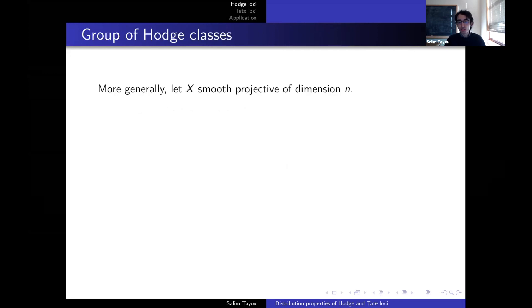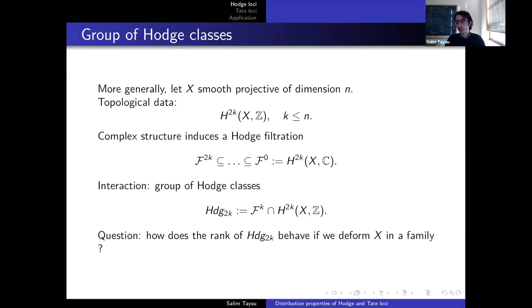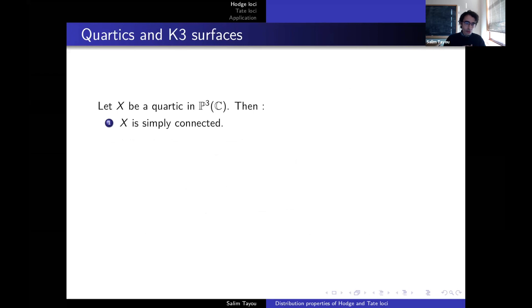More generally, if you have a smooth projective variety of dimension n, as in the beginning, the topological data will be encoded in this singular cohomology group that we can attach to this variety. And the complex structure will induce a filtration called the Hodge filtration on this H^{2K}. This Hodge filtration starts from the 2K vector space. And of course, the interaction between these two can be also measured by the so-called group of Hodge classes, which are elements in the integral cohomology group, which are of type KK. Of course, the analogous result of Lefschetz is the so-called Hodge conjecture, which predicts that this one is rationally linear combination of algebraic cycles, which is not known in general. But still, one can ask how this rank behaves if we deform X in family.